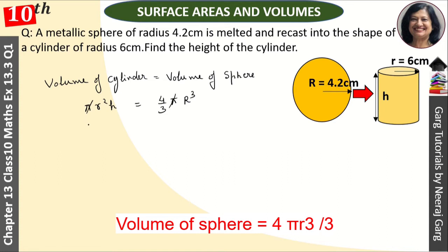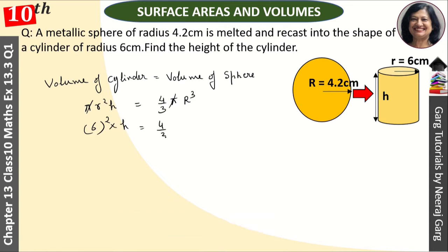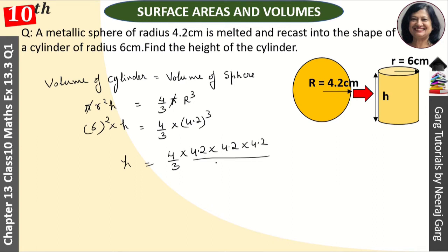This π cancels from both sides. We will put in the values: 6² × h = (4/3) × 4.2³. So h equals (4/3) × 4.2 × 4.2 × 4.2 divided by 6 × 6.